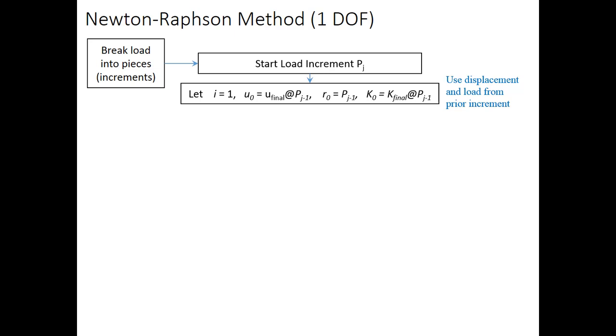Inside each load increment, we have an iteration. The iteration index is I. So, I equals 1 as soon as we start the load increment, and then it increases as we keep increasing the increment. We have U evaluated at the beginning of the increment.